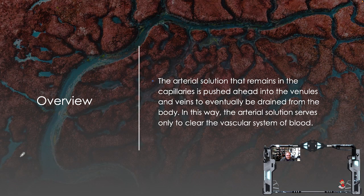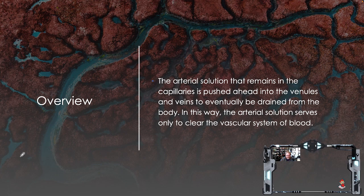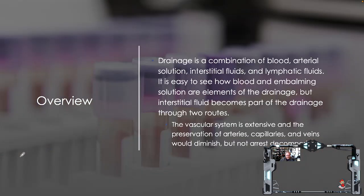The arterial solution that remains in the capillaries is pushed ahead into the venules and veins to eventually be drained from the body. In this way, the arterial solution serves only to clear the vascular system of blood, which is also important. Blood rapidly breaks down and reacts with formaldehyde to turn gray, so getting rid of as much of it as possible is beneficial.